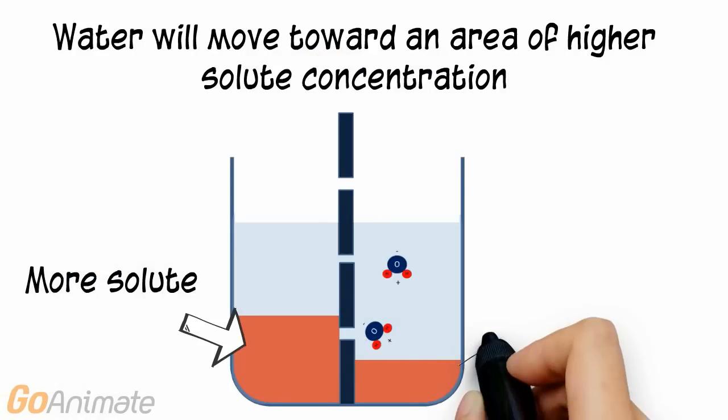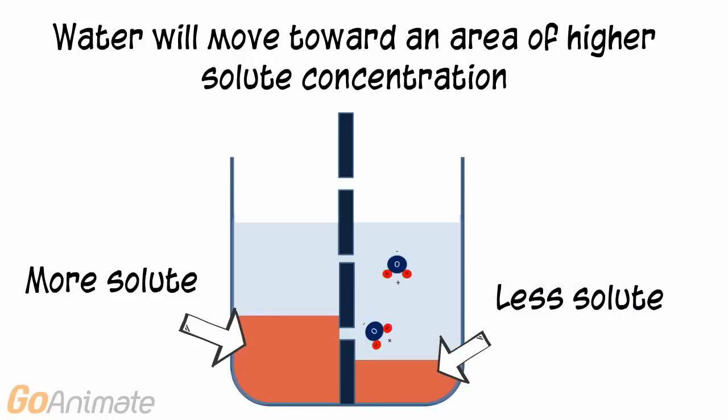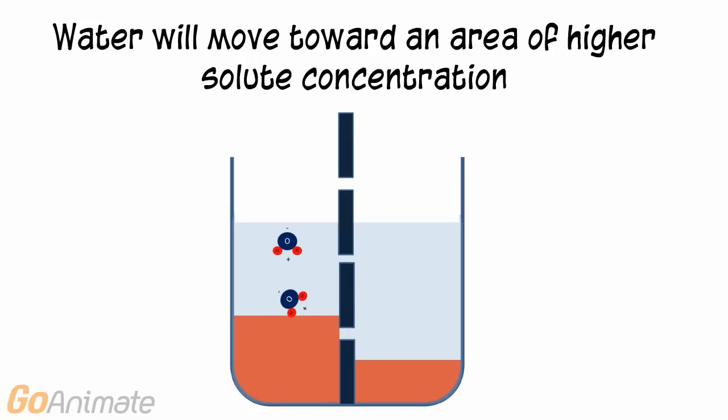If a beaker is separated into two compartments by a semi-permeable membrane, and each compartment has a different solute concentration, water will move toward the area of higher solute concentration.